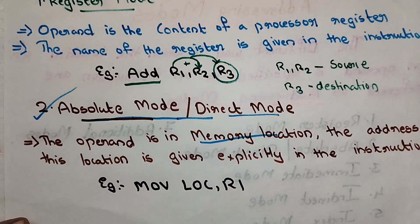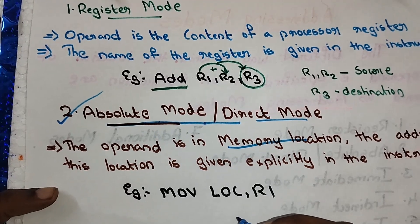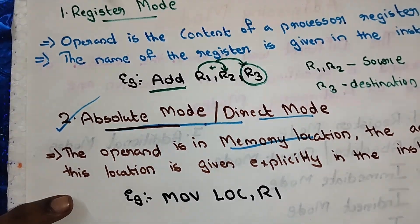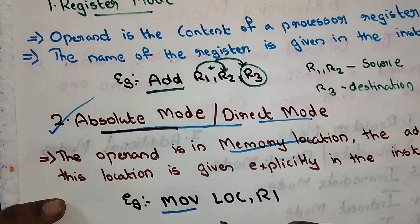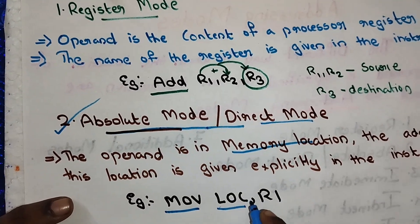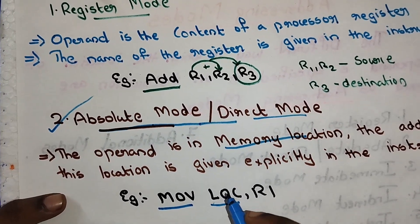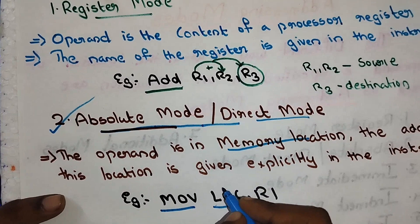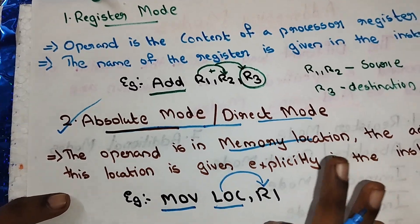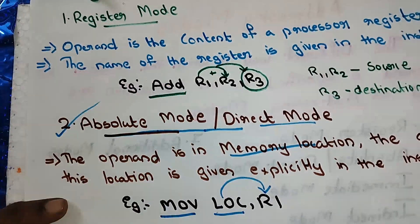An example of direct addressing mode: MOVE LOC, R1. Here LOC is a memory location. The value at memory location LOC is transferred — moved into the R1 register. This is the direct addressing mode: the memory location is given directly, and its value is moved to R1.